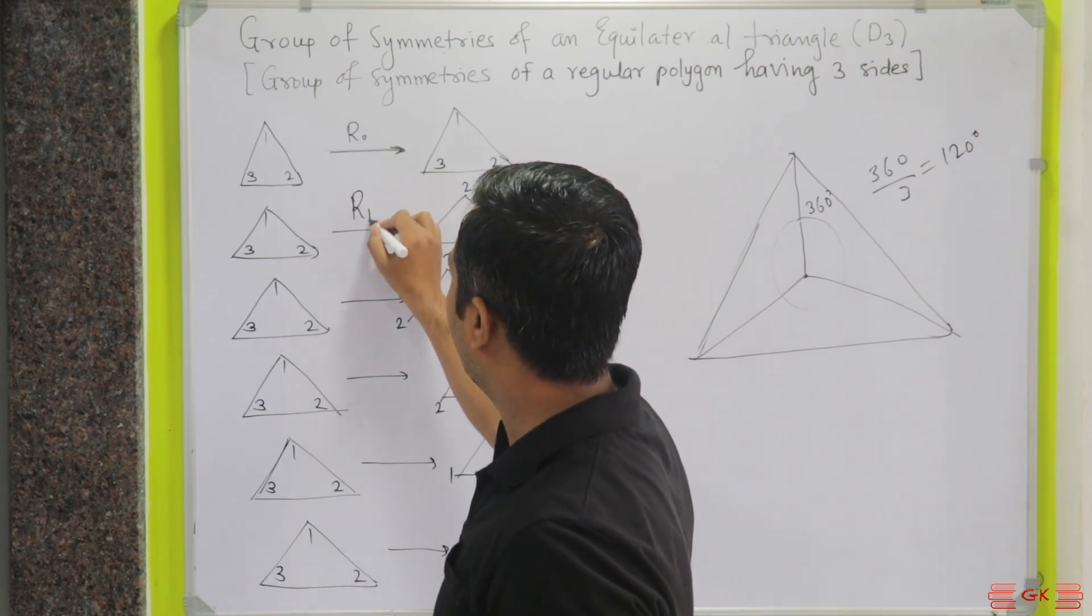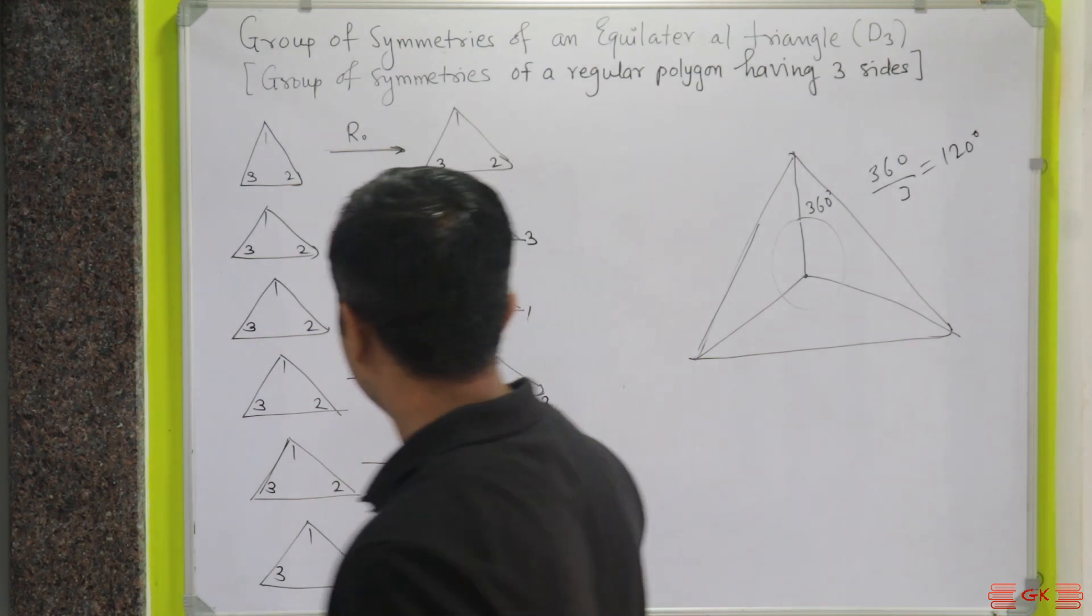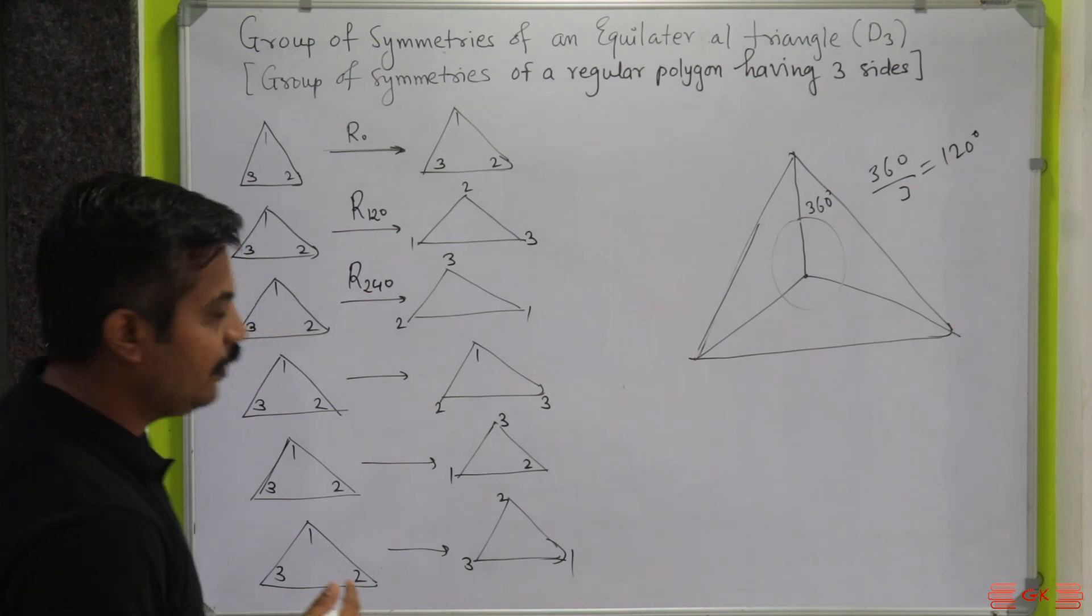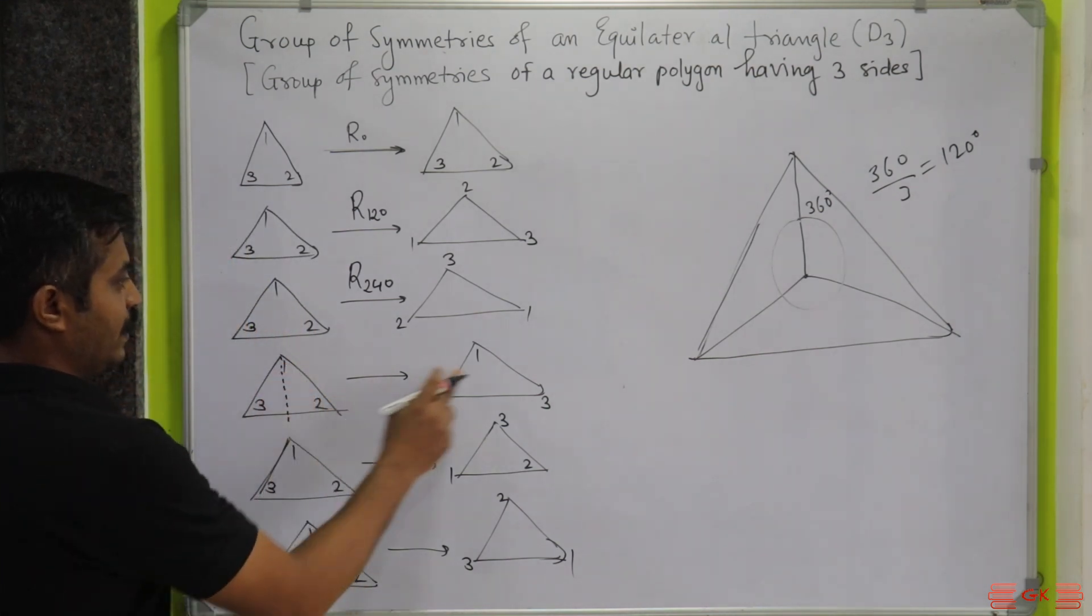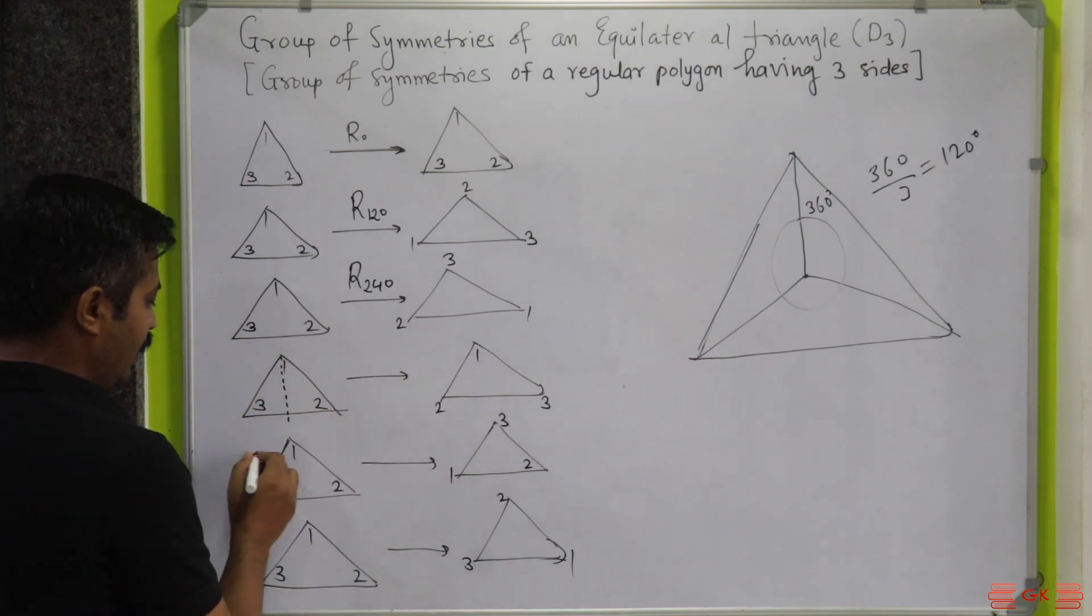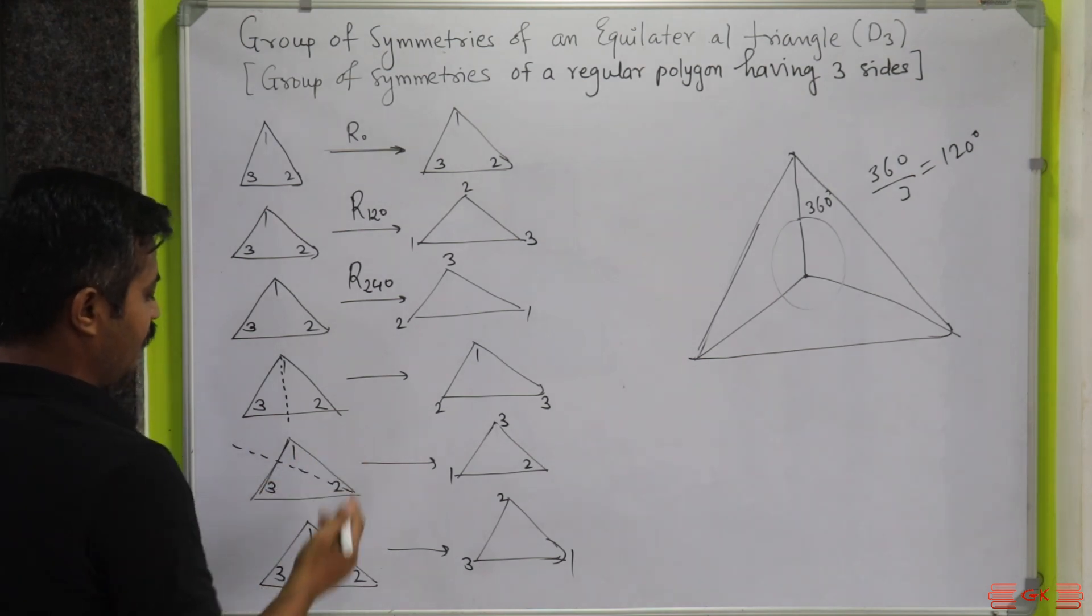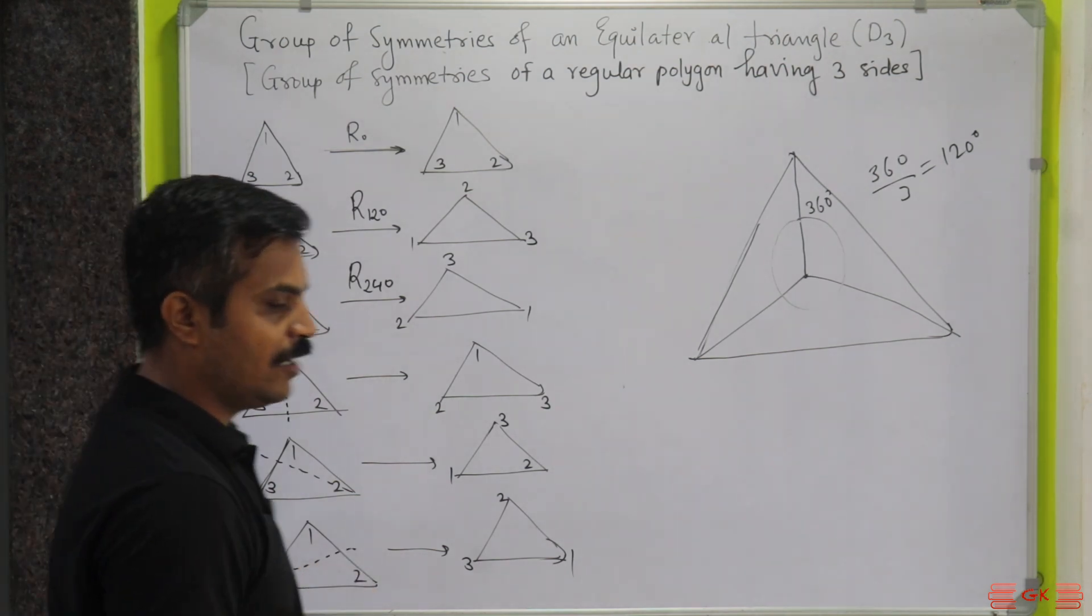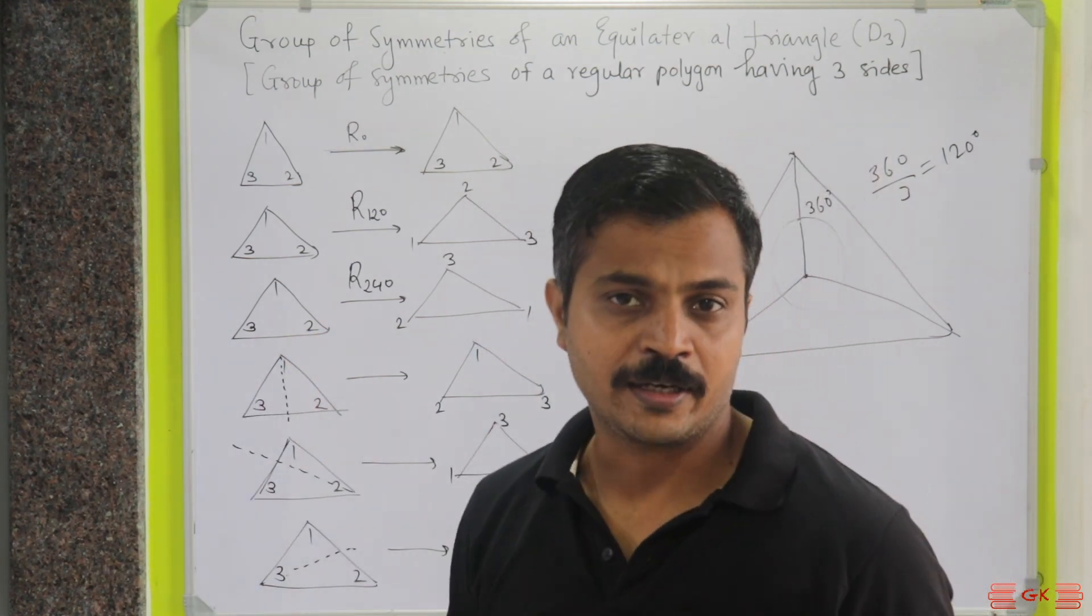So I will write R120 here, and this will be R240 here. Now, we are having a few more symmetries. Fixing one vertex as it is and simply rotating—fixing this vertex, and then rotating—you will get three more symmetries in fact.